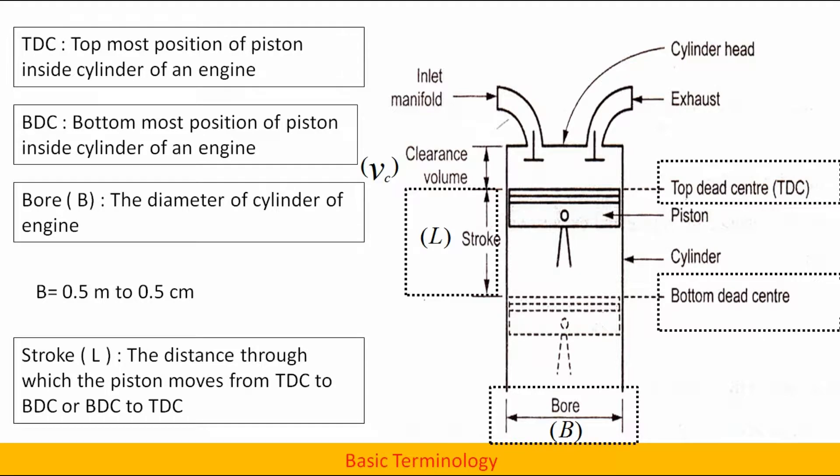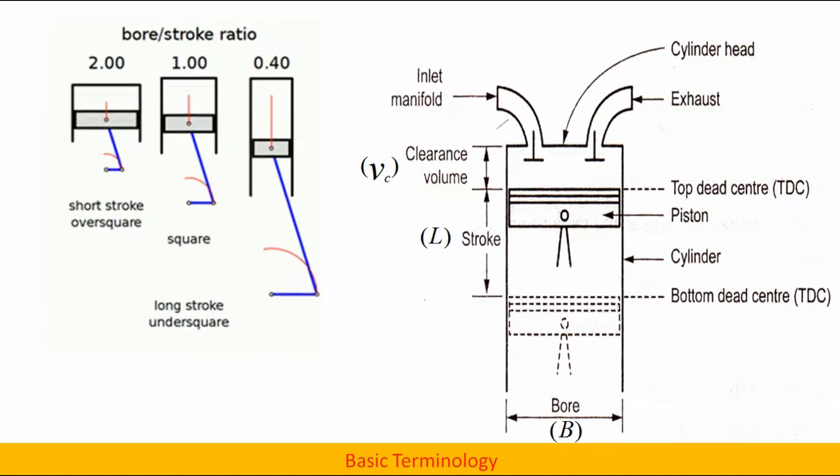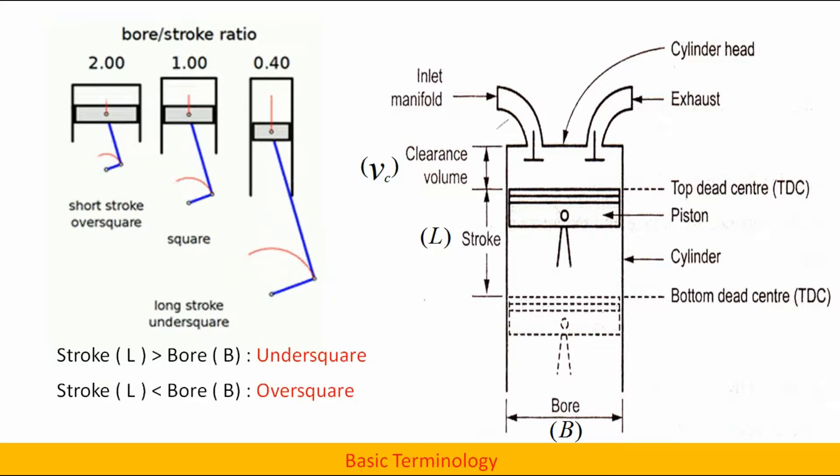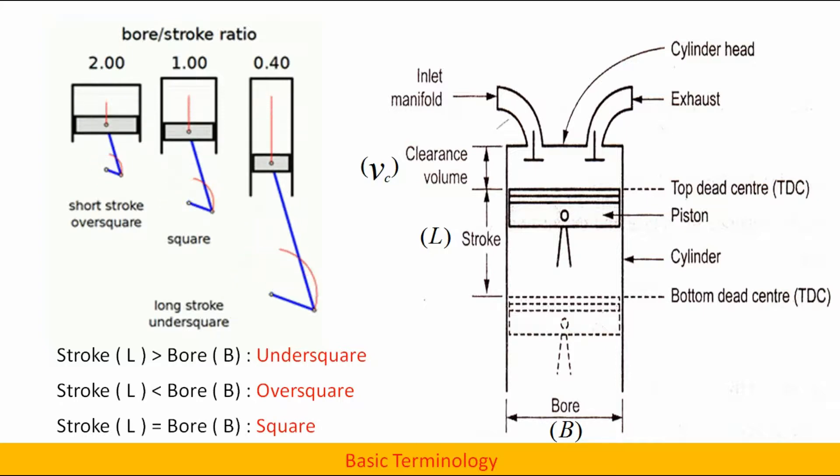Stroke: the distance to which the piston moves from TDC to BDC or BDC to TDC. If the stroke is greater than bore then it is called undersquared engine. If stroke is less than bore then it is called oversquared engine. And if stroke is equal to bore then it is called square engine.